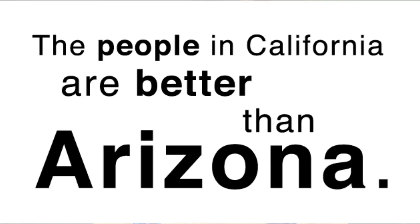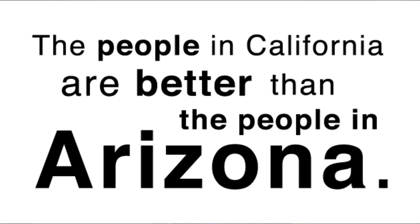The next grammar topic you should be aware of is faulty comparisons — these are also a little tricky. Let's say you're given the sentence 'the people in California are better than Arizona.' That sentence looks okay, right? Well, it's actually incorrect. You see, the sentence is trying to compare the people in California with the people in Arizona, not with Arizona itself. It's comparing an apple and a left shoe, not two apples. The sentence should read 'the people in California are better than the people in Arizona.' Doesn't that look much better? It's because the sentence is now comparing two like things.